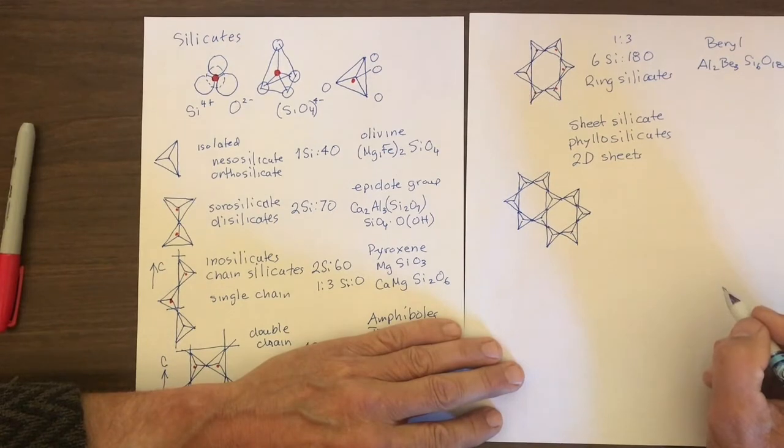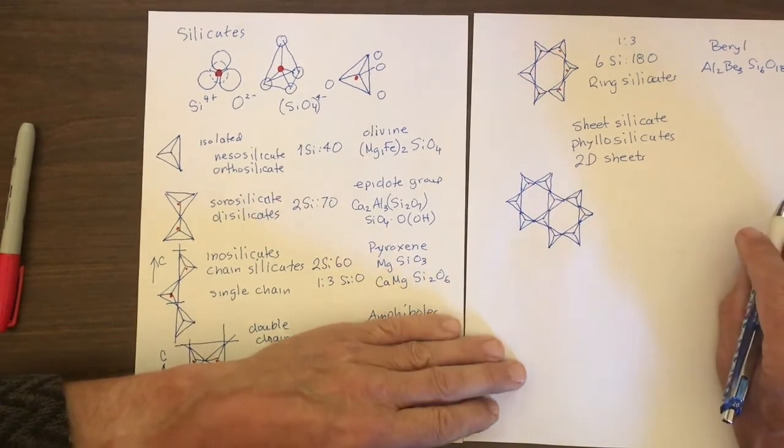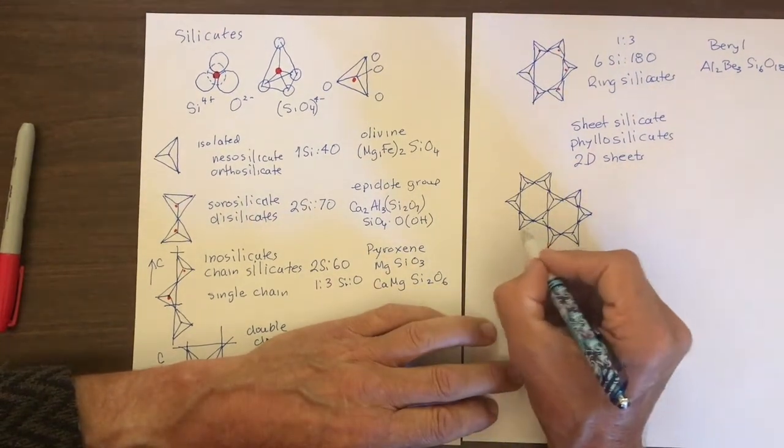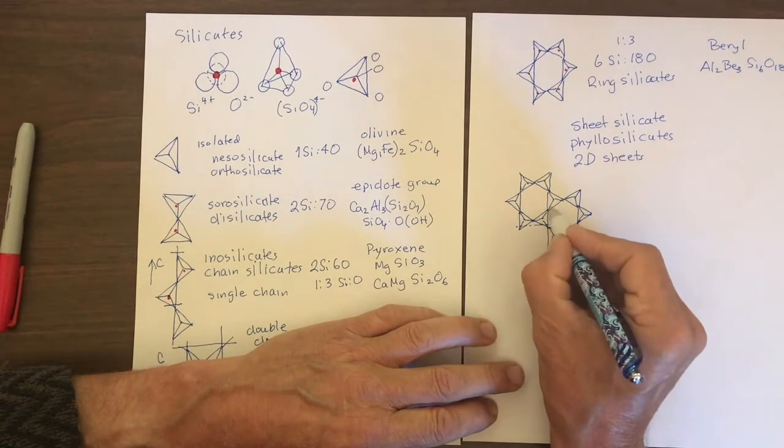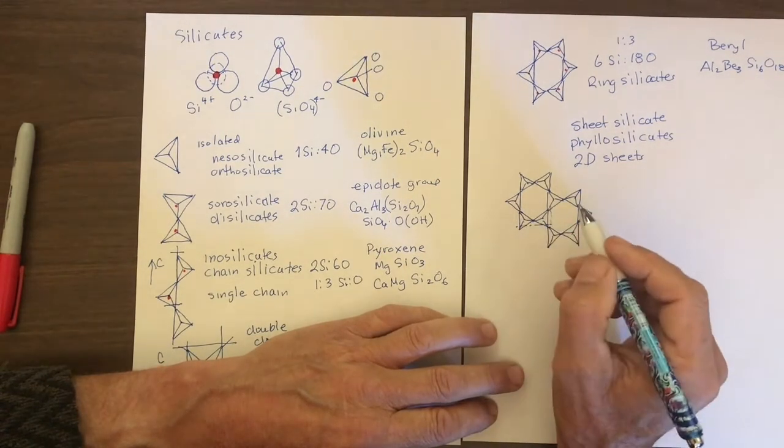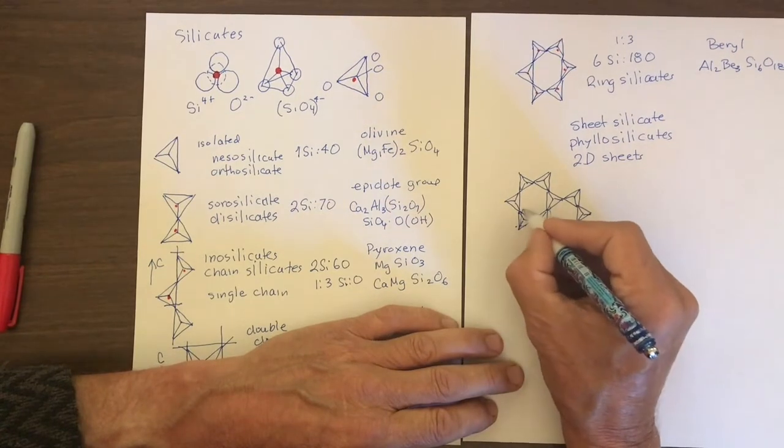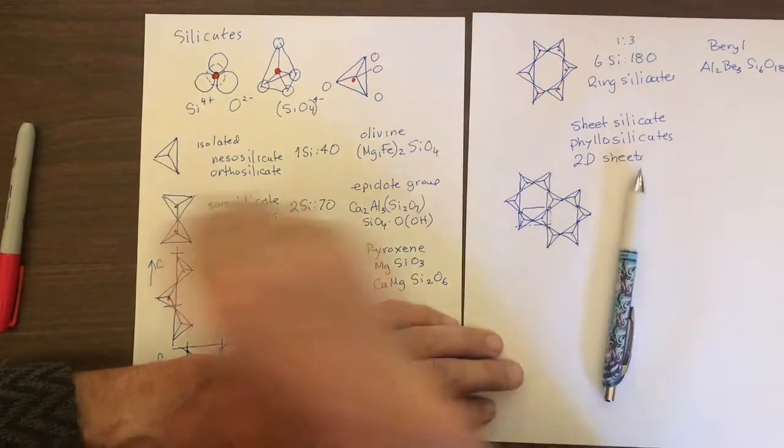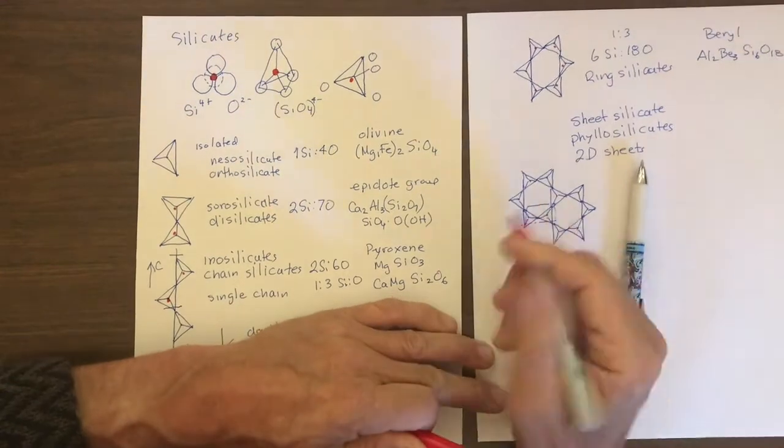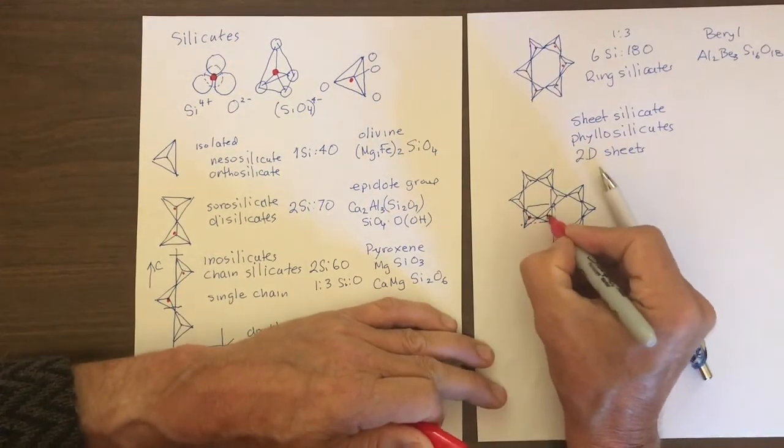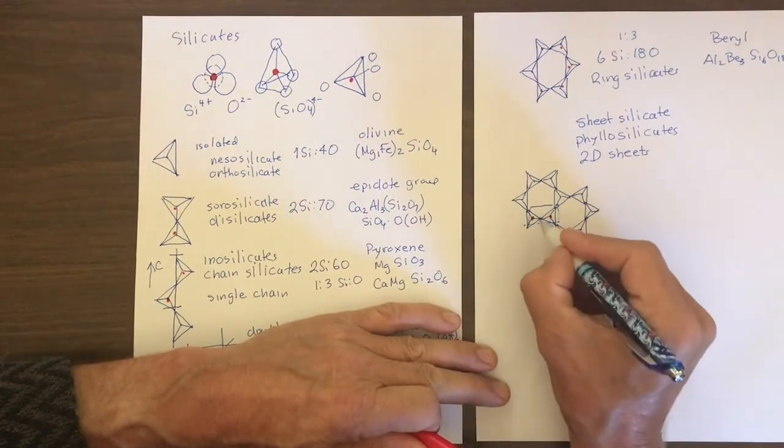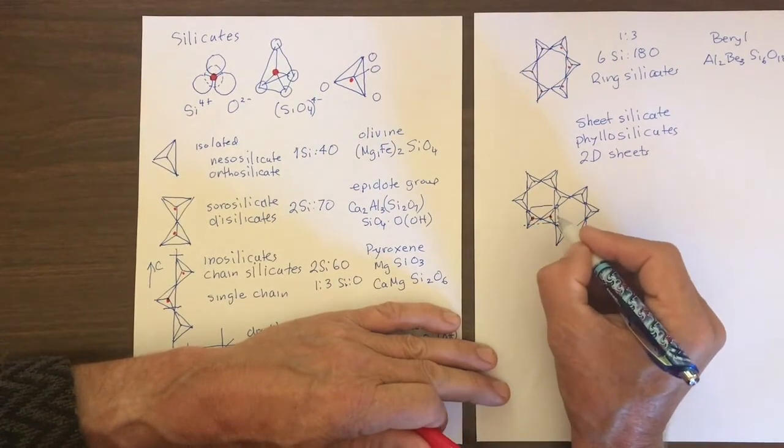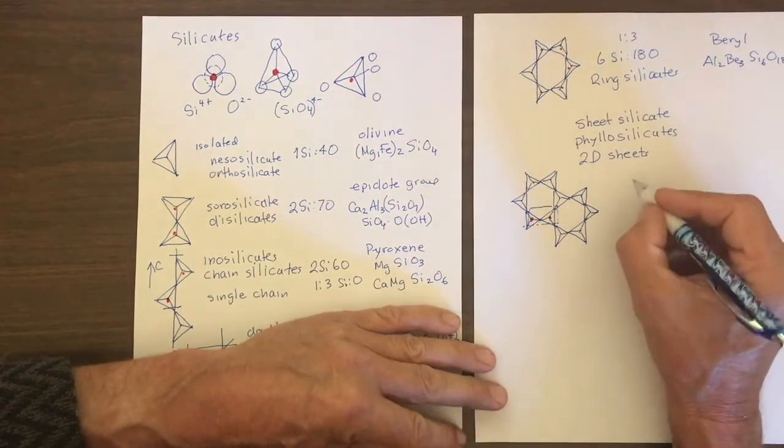So it turns out the repeat for a unit cell is quite simple. And it looks like this. I'm just gonna go up here. And that cell has two silicas in it, like that. And it has one, two, three, four, five oxygens.